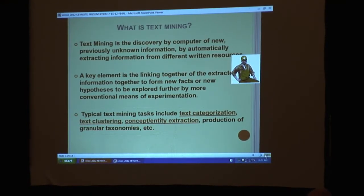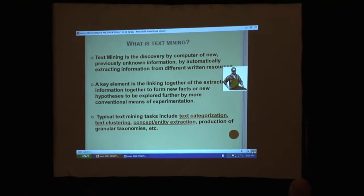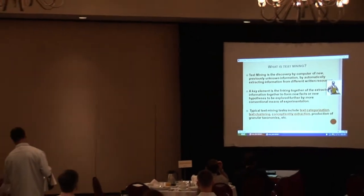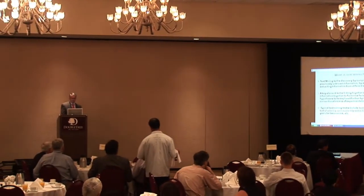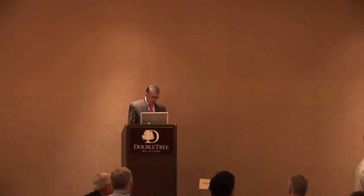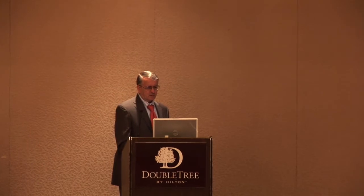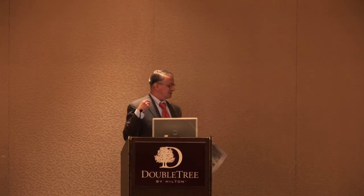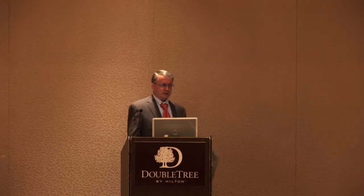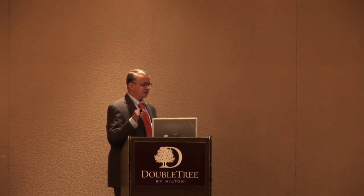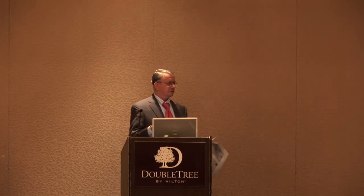Text mining is the discovery of new, previously unknown information by automatically extracting information from different written resources. A key element is linking together extracted information to form new facts or hypotheses. It's also known as text categorization, text clustering, concept and entity extraction, and production of granular taxonomies. An example involves written documents from the 1800s of unknown authorship — by comparing the frequency of terms in the unknown document to a known document like the Bill of Rights, researchers could make a good conjecture about who wrote the unknown document.